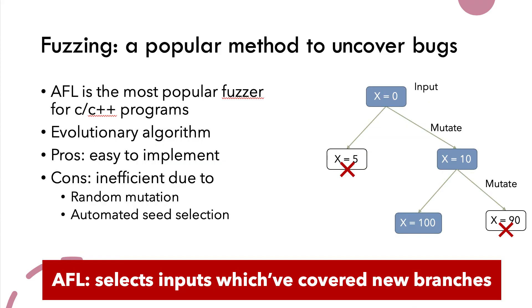One popular method to uncover bugs is fuzzing, where AFL is the most popular fuzzer for C and C++ programs. It uses an evolutionary algorithm. The idea of fuzzing is simple: we randomly feed different permutations of an input into a target program until one of those permutations reveals a vulnerability.